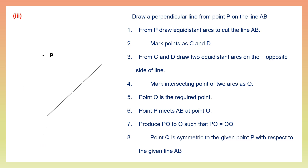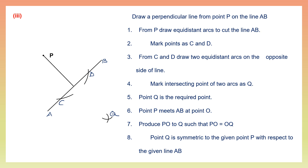Question 3 follows the same steps. We have a line — let's name it AB — and a point P. From point P, keeping your compass on P, cut two arcs on AB and name them C and D. Keeping your compass on C, draw an arc on the opposite side; keep it on D and cut that arc. The point where the two arcs have met is Q. From P, draw a line touching AB — the point where it touches is O. Extend OP until it meets Q. OP equals OQ, so the required point is Q.